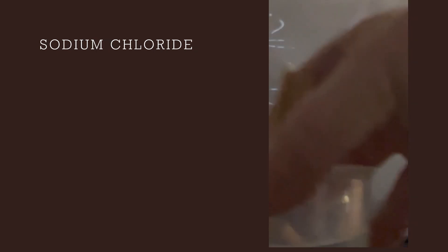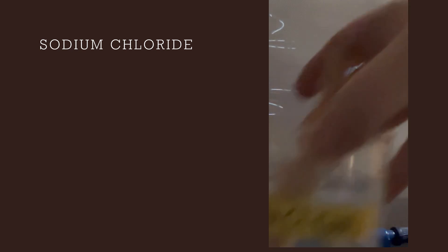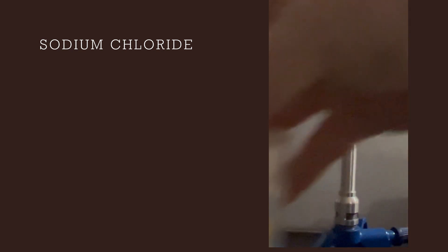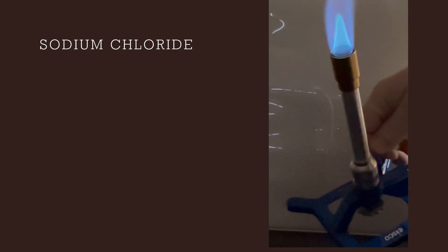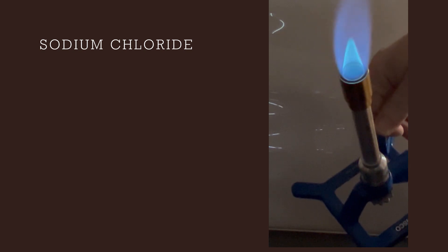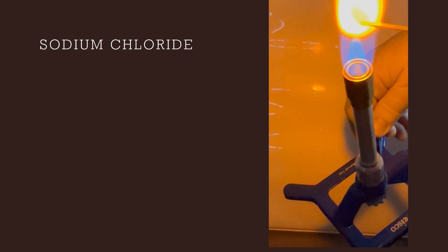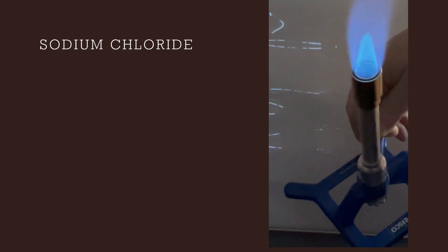Our first one we're going to use for this experiment is NaCl. So I'm going to grab a wood splint. Remember, the hottest part of that flame is the top of that inner core. Notice the wood splint has not lit on fire. So that color was not from the wood splint being on fire.